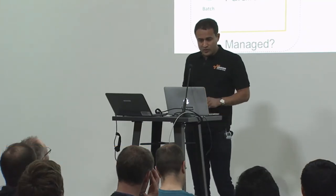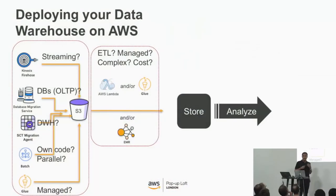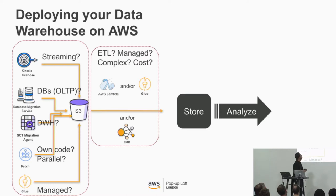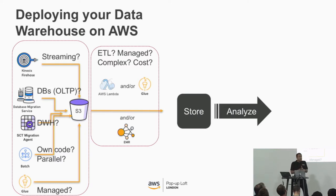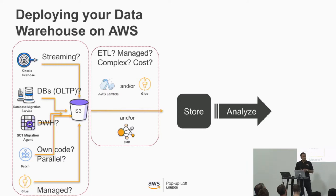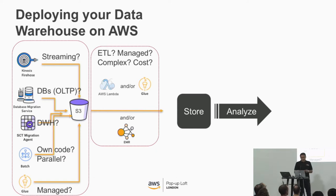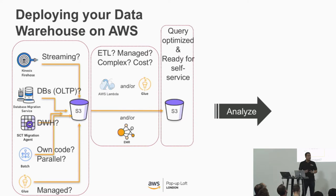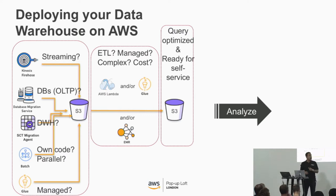The next step is to work out how you would prepare that data for analysis. At that stage, you're considering ETL — probably the most commonly used term in computer science. You look at how complex your ETL process is. Is it going to run less than five minutes with small transformations? Then you can use AWS Lambda. If you want big data style fully managed ETL, you can use AWS Glue. Or if it's extremely complex with lots of aggregation and combining different data sources, then you want to use Amazon EMR, our managed Hadoop. The idea is to store the data again on S3 in a query-optimized format, ready for self-service.